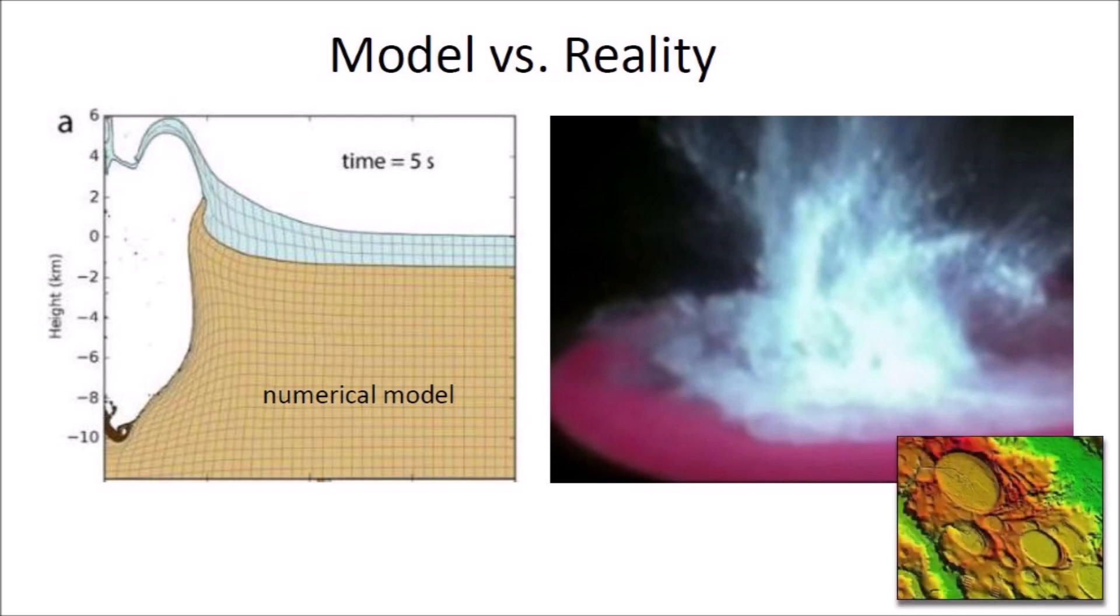The secondary impacts of the ice pieces ejected in the real-life experiment would be capable of creating impact basins like the Carolina Bays.